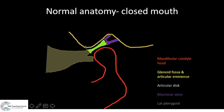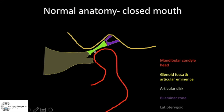The prominence here is the articular eminence. If you look at the articular disc posteriorly, it is attached to the temporal bone by the retrodiscal tissue, where you have a bilaminar zone. The purple structure is what is holding the articular disc in place, and around it you have fat and fibroelastic tissue. Anteriorly, the lateral pterygoid muscle is closely attached to the articular disc area, holding it in place, and part of it is attached to the mandible too.